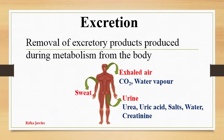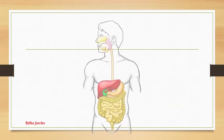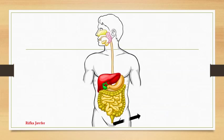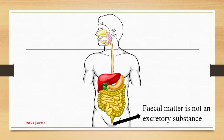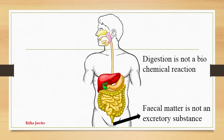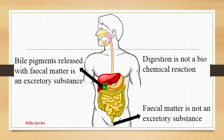And skin releases sweat which contains urea, uric acid, sodium chloride and water. Fecal matter is not an excretory substance because digestion is not a chemical reaction. However, bile pigments released with fecal matter are excretory substances.